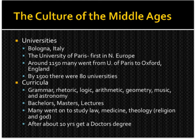Although many historians believe the Middle Ages was backwards compared to the classical period of the Greeks and Romans, there is a flourishing of culture, especially in academia. You have the rise of universities in Bologna, Italy, the University of Paris in Northern Europe, and around the year 1150 many people went to Oxford, England instead. By the year 1500, there were 80 universities spanning Europe.